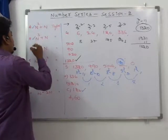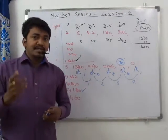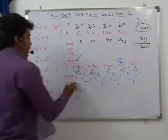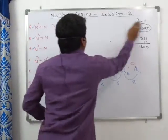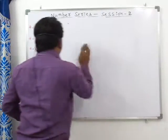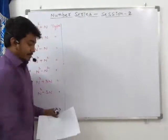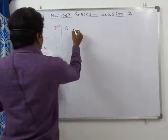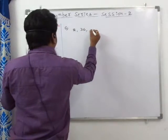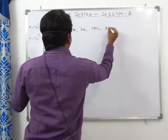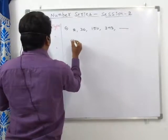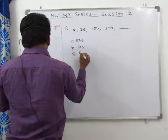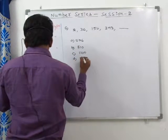Next we will see a different set of questions belonging to the N³ + N² series. Question number 6: the series is 2, 36, 150, 392 — what is the missing number? Options are 576, 8, 10, 11, 13, and 152.